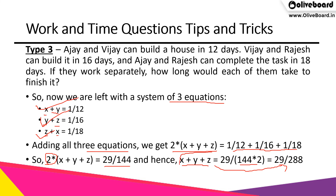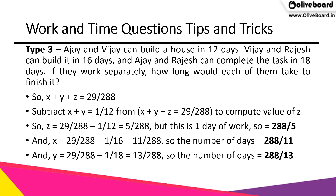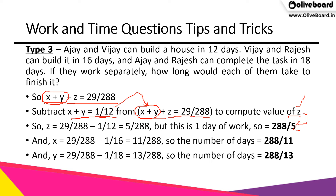Now we use this to find each variable. To find Z, subtract equation 1 (X + Y = 1/12) from (X + Y + Z = 29/288): Z = 29/288 − 1/12 = 5/288. This is Z's work per day. Since work per day is 1/n, if Z does 5/288 of work per day, the number of days Rajesh needs is the reciprocal: 288/5 days.